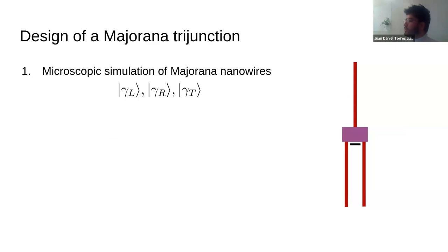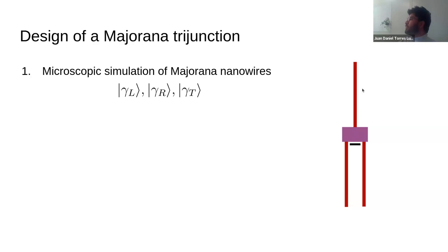Now let us introduce the design and simulation we perform. The first ingredient is a microscopic simulation of Majorana nanowires — not a minimal description, but a microscopic model where we choose a given material and drive the wires into the topological phase by choosing appropriate parameters. There will be six Majoranas in total. However, since we focus on the trijunction design and the Majoranas are decoupled because the wires are long, we consider only three Majoranas: gamma left, gamma right, and gamma top.